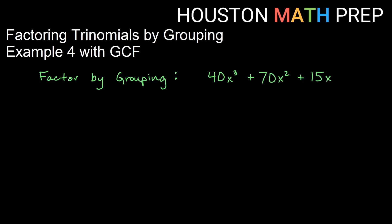Remember, whenever you do any sort of factoring, you always want to check for the greatest common factor first. If we look here at 40 and 70 and 15, they all have a greatest common factor of 5.